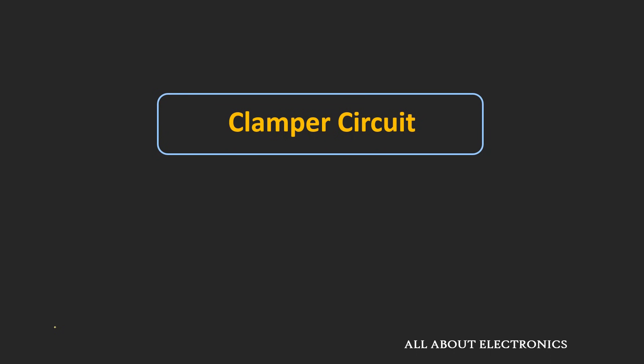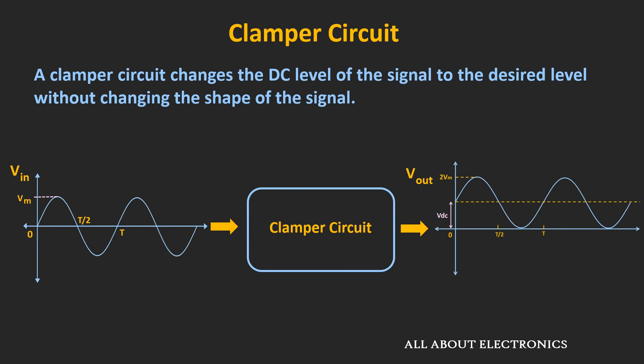Hey friends, welcome to the YouTube channel All About Electronics. In this video, we will learn about the clamper circuit. A clamper circuit changes the DC level of the signal to the desired level, and at the same time, it does not change the shape of the waveform.